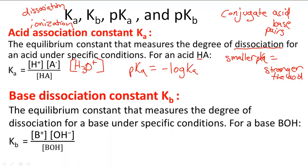Now, let's talk about the base dissociation constant, Kb. It's an equilibrium constant that measures the degree of dissociation for a base under specific conditions. We have BOH, which is our base, and then the ions it separates into multiplied together, the concentrations divided by the concentration of the whole base.